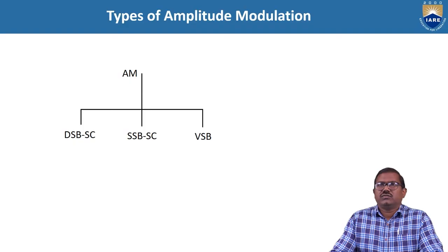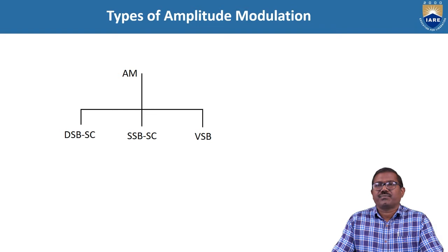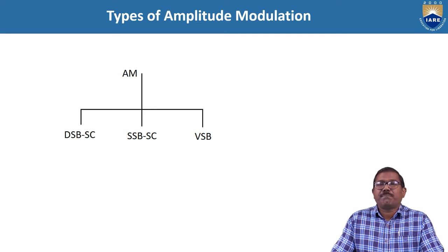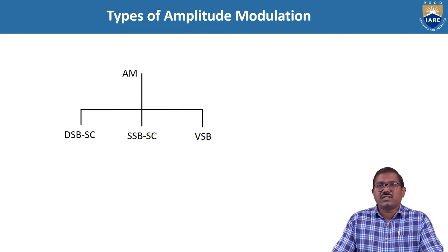Let us come to the topic. First, the types of amplitude modulation — how many types does AM have? The first one is DSB full carrier, which is nothing but our standard amplitude modulated signal. Another one is DSBSC, where we suppress the carrier. The drawbacks of AM are that power is wasted and it uses more bandwidth.